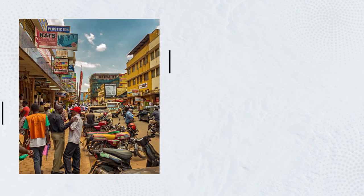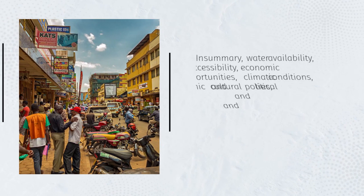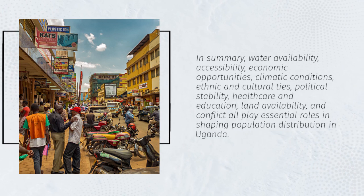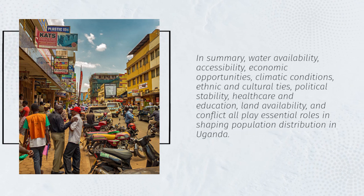In summary, water availability, accessibility, economic opportunities, climatic conditions, ethnic and cultural ties, political stability, healthcare and education, land availability, and conflict all play essential roles in shaping population distribution in Uganda.